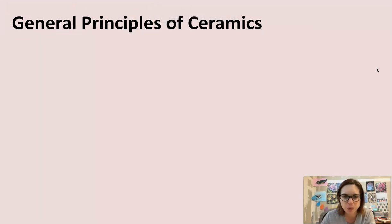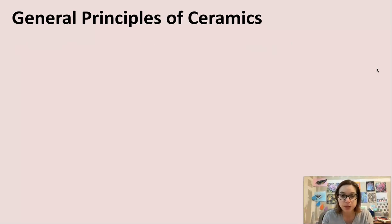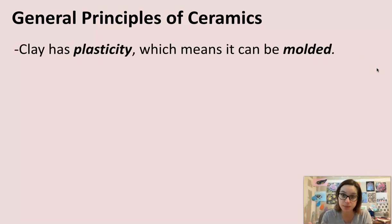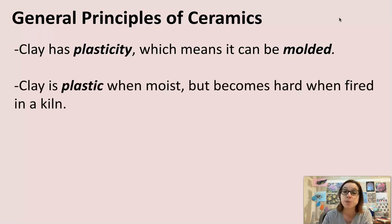So let's go over the general principles of ceramics. These principles determine what you can and cannot do with clay in certain situations. Our first principle is that clay has plasticity, which means it can be molded. If you've ever heard of neuroplasticity, that means our brains are plastic — it means we can learn new things. Plasticity comes from the actual stage of clay called plastic. Clay does not contain plastic; it's just a term that we use.